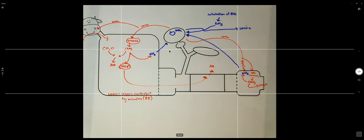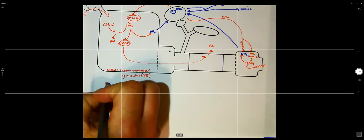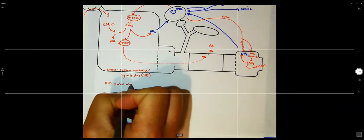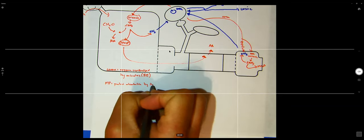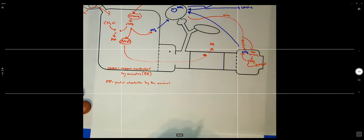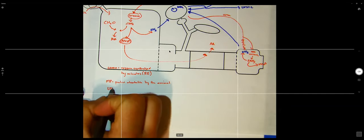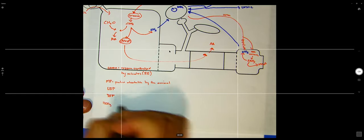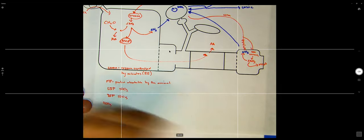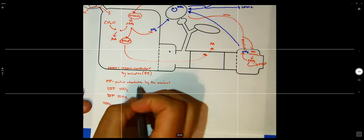Can you go over the metabolizable protein calculation? Metabolizable protein equals the protein absorbable by the animal. Ruminants have two types: UIP (undegradable intake protein) and DIP (degradable intake protein). If I fed a thousand grams of protein that was 50% UIP, I have 500 grams of UIP.